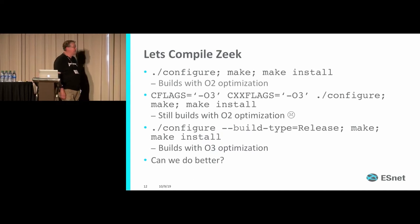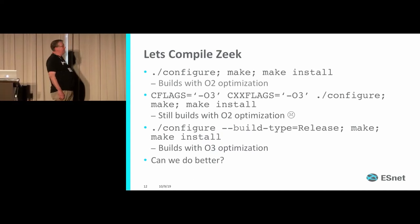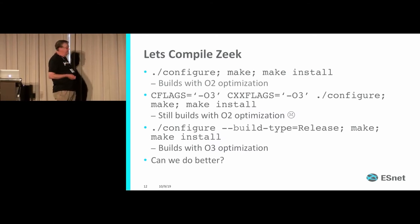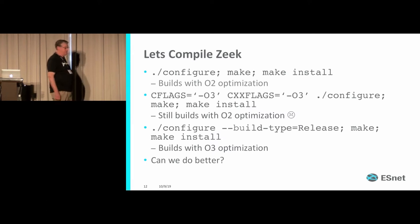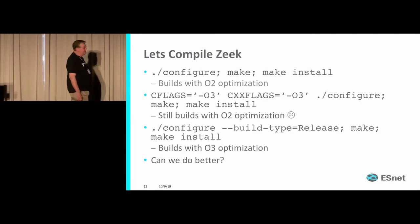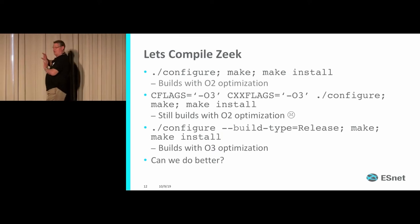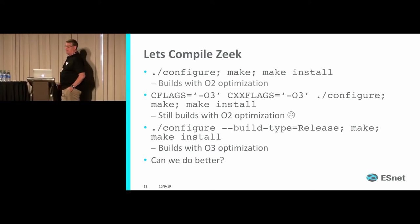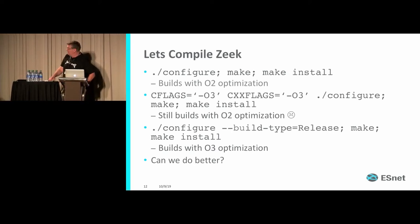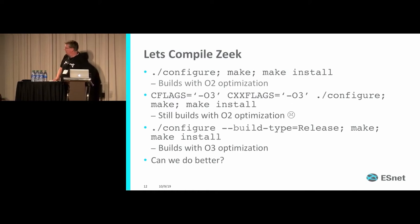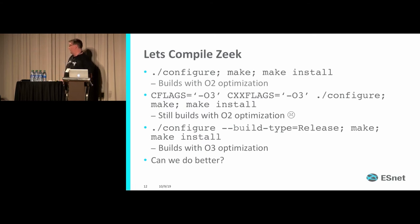Here's a typical compile: you build with O2 optimization if you just do a standard build. What was surprising to me is that adding optimization flags doesn't override the default flags — it's either a bug or a feature. But if you set build type equals release and then build it, you get O3 optimization, which is a bit better.